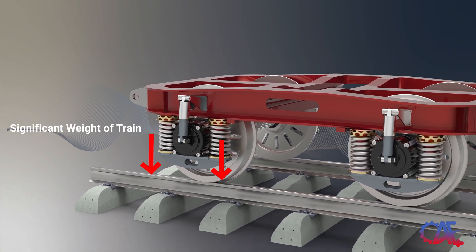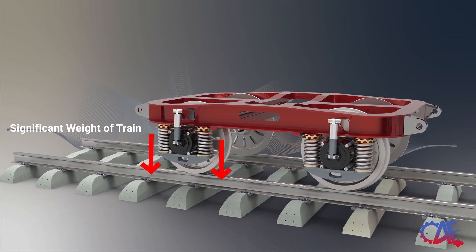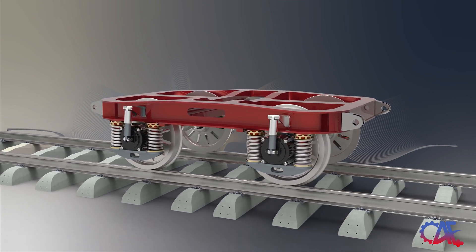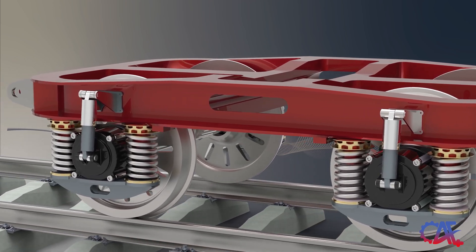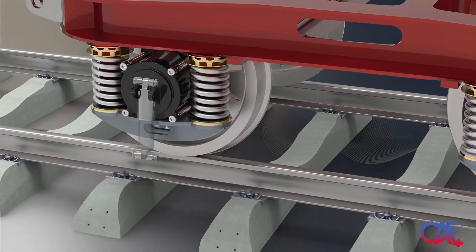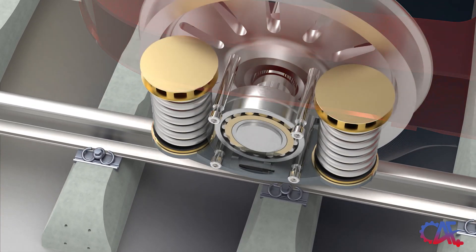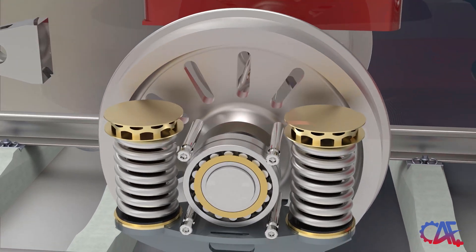Given the significant weight of trains, they experience both lateral and radial movements as they travel along the rails. Dynamic loading, resulting from the train's movement, places varying stresses on the spherical bearing, especially when the train navigates curves, ascends or descends gradients, or undergoes acceleration and deceleration. Furthermore, abrupt stops and starts at stations intensify these loads.